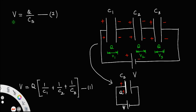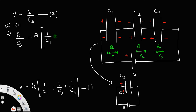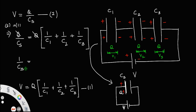From equations 1 and 2, the left-hand side remains the same, so we can equate them: Q divided by Cs equals Q times (1/C1 + 1/C2 + 1/C3). Cancelling Q from both sides, we get the relation: 1/Cs equals 1/C1 + 1/C2 + 1/C3. That is, the reciprocal of the effective capacitance of the series combination equals the sum of the reciprocals of the individual capacitances.